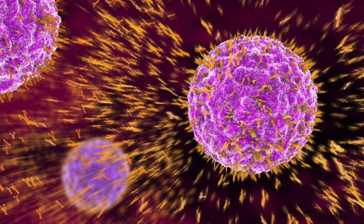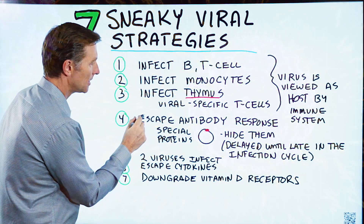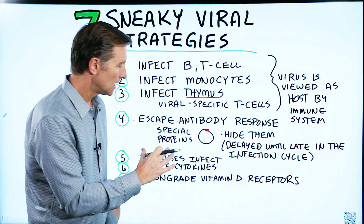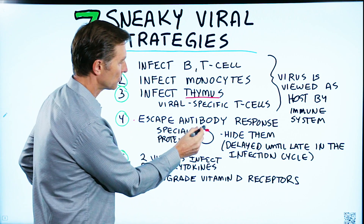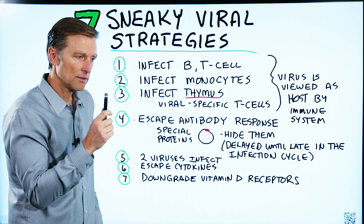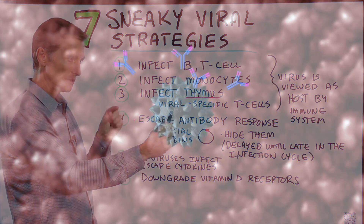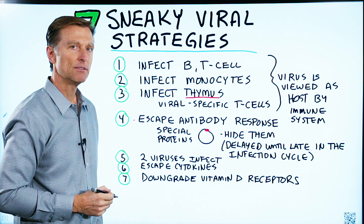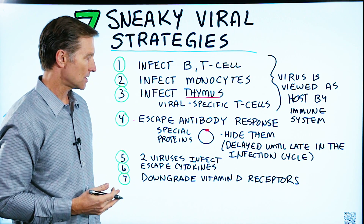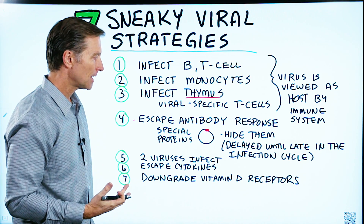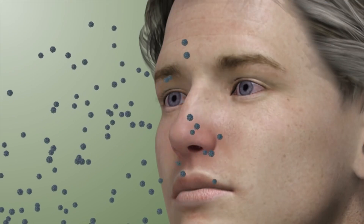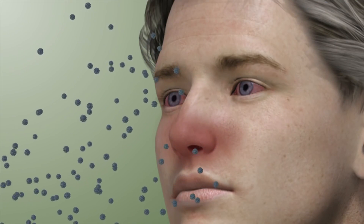Number four: viruses have the ability to escape antibody response. The shell of a virus has a little protein on it — like a little flag that your immune system can see, tag, and go after. But these special proteins or flags can be hidden by the virus so our own immune system cannot find them, resulting in a delayed immune response until after the infection has already set in. Very sneaky.